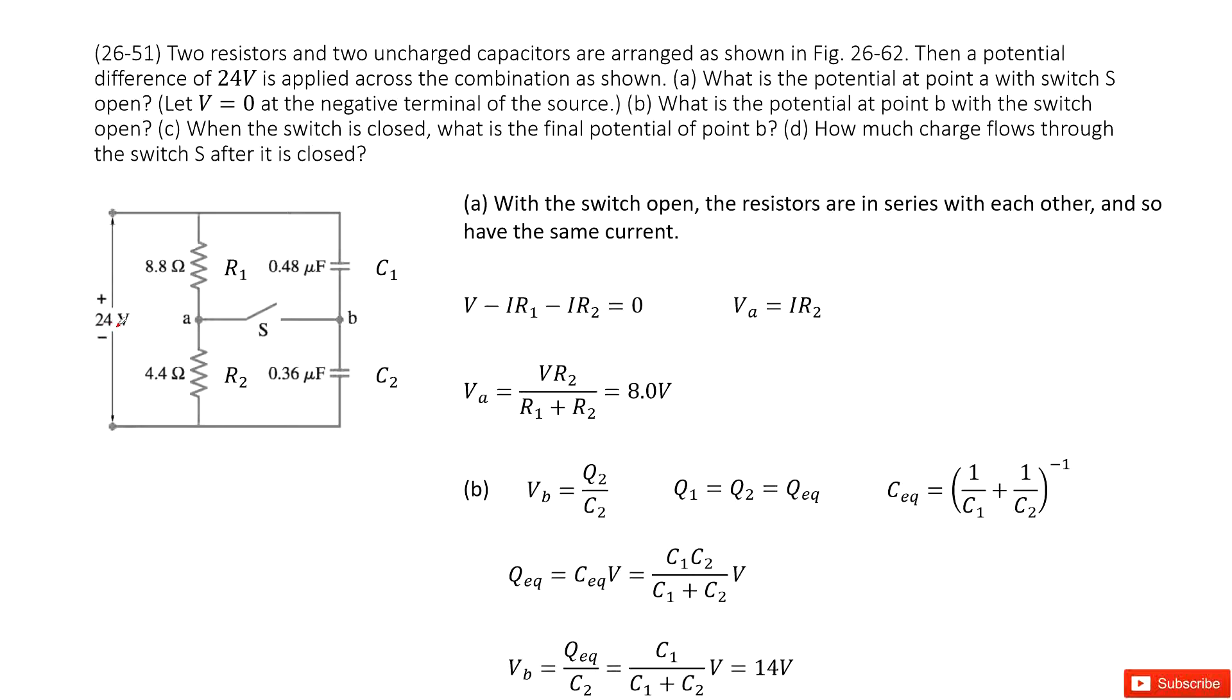Ask you what is the potential at point A when the switch is open. As we can see when the switch is open, the branch for the resistor is just a potential difference, 24 volts. The hint tells us this is 0 volts, this is 24 volts. And ask you what is the voltage at A?